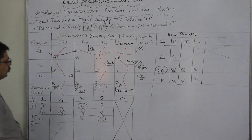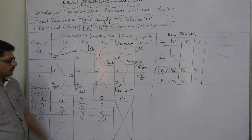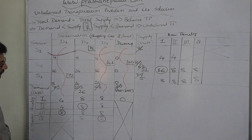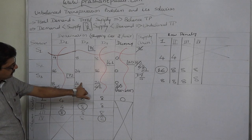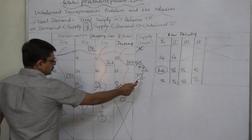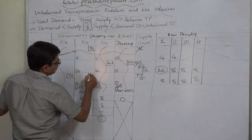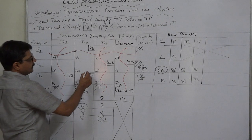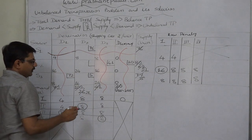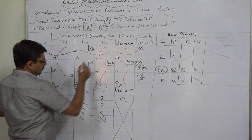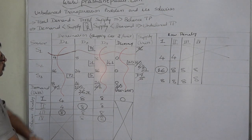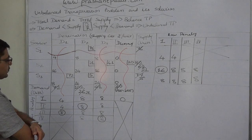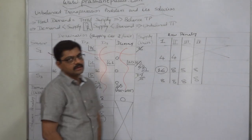Now only two open cells remain in one column, so we apply the least cost principle rather than calculating penalties. The cell with cost 16 is selected first: min(5 supply from S3, 26 remaining demand of D2) = 5 units allocated, leaving 21 units of D2 demand. The last cell, with cost 24, receives the remaining 21 units. All supply from sources S1, S2, S3 is exhausted and all demand centers D1, D2, D3 are fully satisfied.